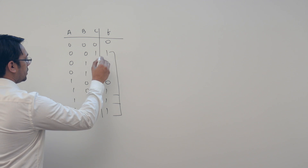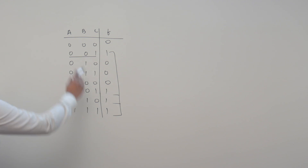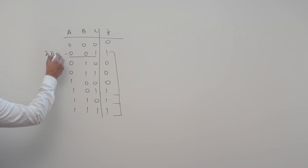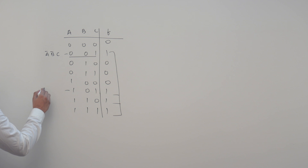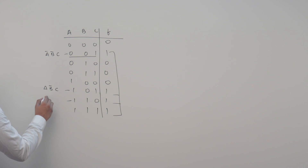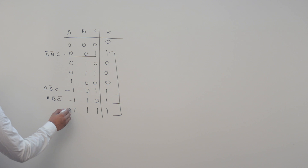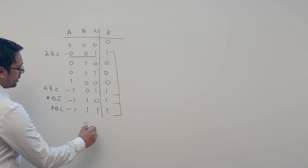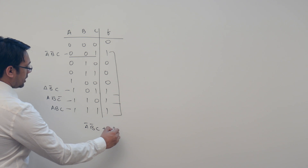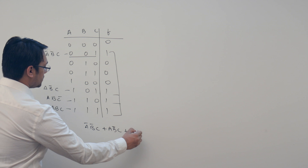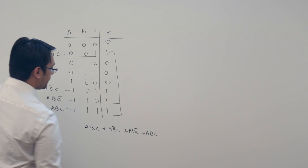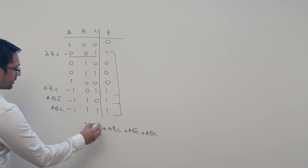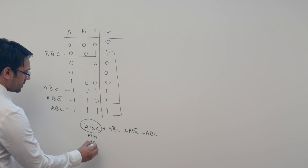For example, here this is 0 0 1 — for A it is 0, for B it is 0, for C it is 1 — so I can write it as A complement B complement C. You can write it as A B complement C. You can write it as A B C complement and you can write it as A B and C. So for the locations where the function is assuming a value 1, I can write these locations as A complement B complement C plus A B complement C plus ABC complement plus ABC.